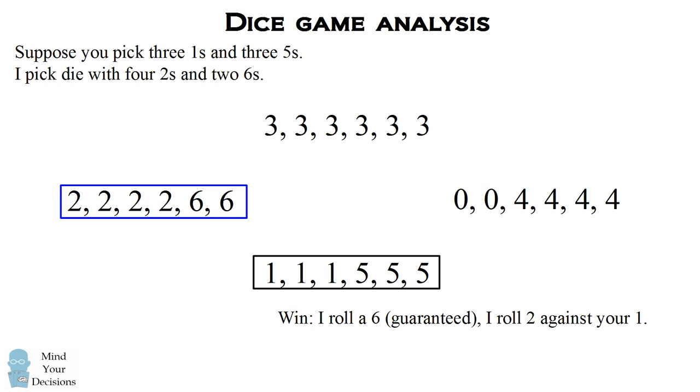And I'm also going to win if I roll a two, which is four six of the time, against your one, which happens three six of the time. So once again, I'm going to beat your die two-thirds of the time.